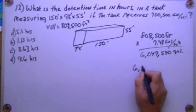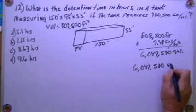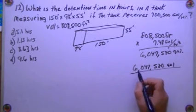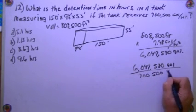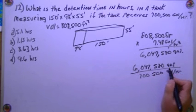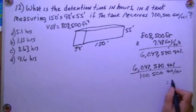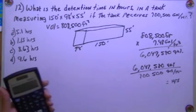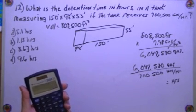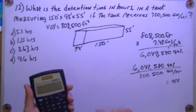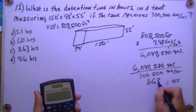And I'll rewrite it anyway, 6,047,580 gallons divided by 700,500 gallons per hour. The gallons will cancel out, I'll end up with hours. And that's going to be divided by 700,500. And I'm going to get 8.63 hours.